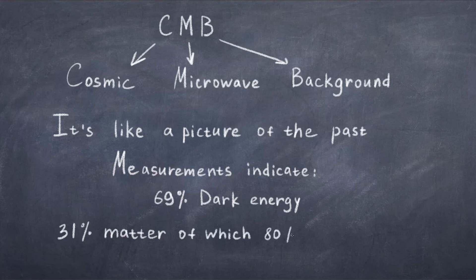Some of the most precise measurements of the content of the universe comes from measuring the CMB. That's why we today think that the universe is made of around 69% dark energy, 31% matter, and of that matter, around 80% is dark. We get much more information than that, but let's just stop here, as the cosmic microwave background is a video on its own.